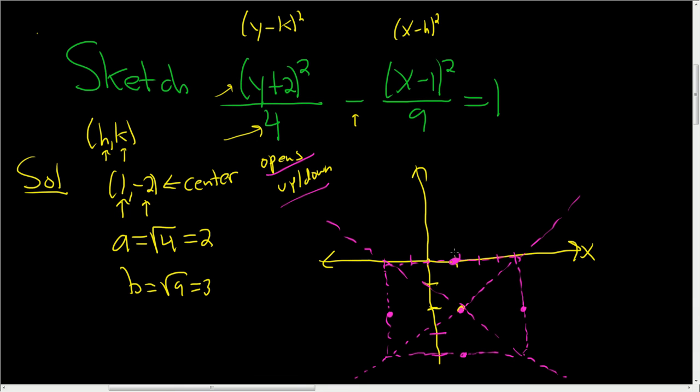And then you draw slant or oblique asymptotes through the corners and through the center of the box. And it opens up and down, so the hyperbola lies on this dot. It's going to look something like that. And then down here, it's going to be the same deal. So that's it.